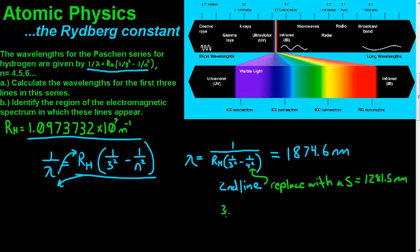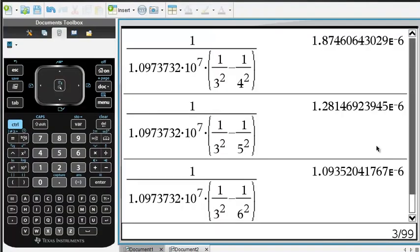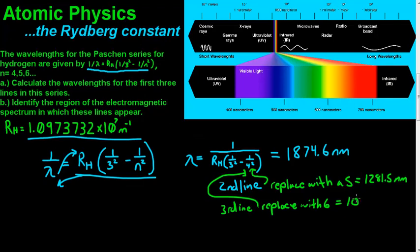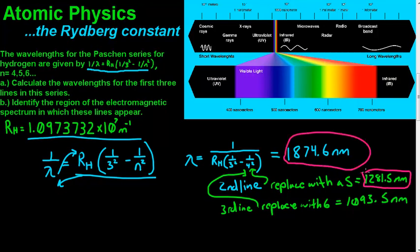And then for the third line, we're going to replace that with a 6, and we are going to get 1,093.5 nanometers. So we got our first, second, and our third.